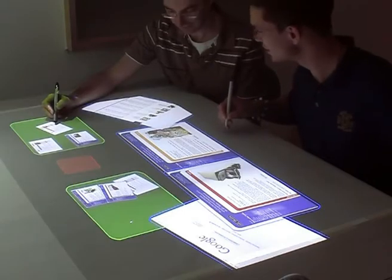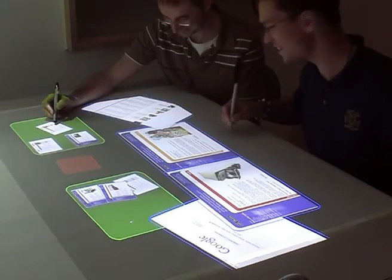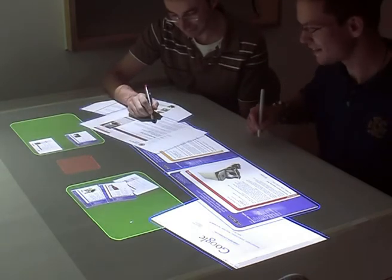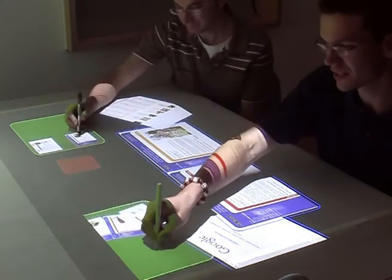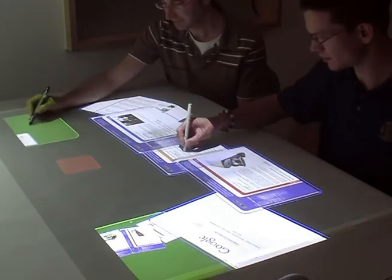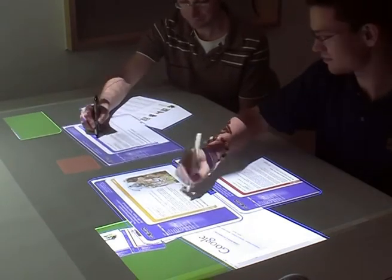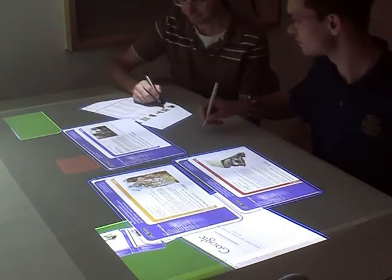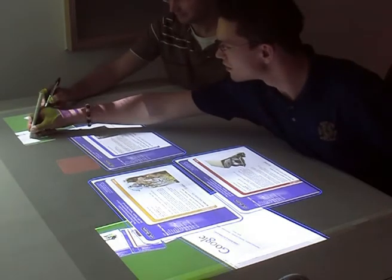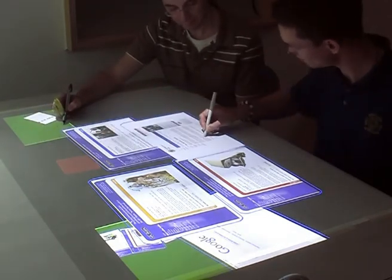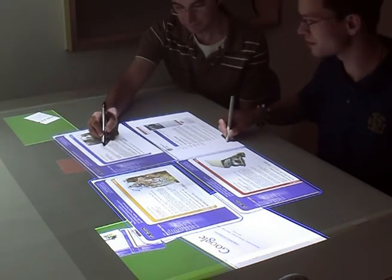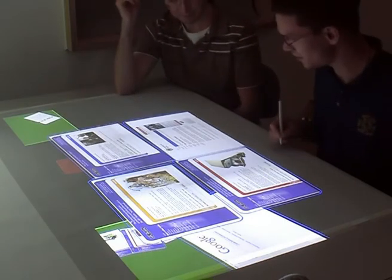Another feature of the T3 system enables researchers to create new tabletop interfaces rapidly by using existing software components from conventional computer programs. For example, when writing our web browser interface, the T3 system enabled us to use an existing web page renderer rather than develop a new one from scratch. The web browsing interface was written in only 700 lines of Java code.